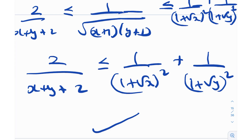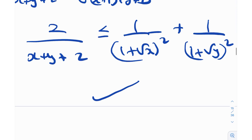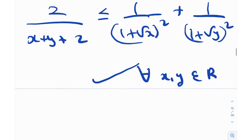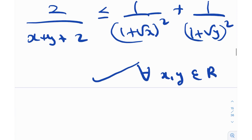That is what we had to prove, and this obviously holds for all x, y — or more precisely, x and y need to be greater than zero, because otherwise the expression inside the square root cannot be negative. That was a good demonstration — hope you learned something from it.